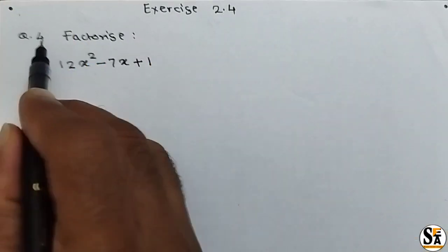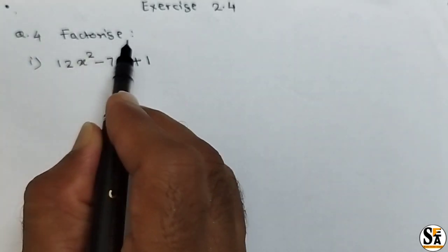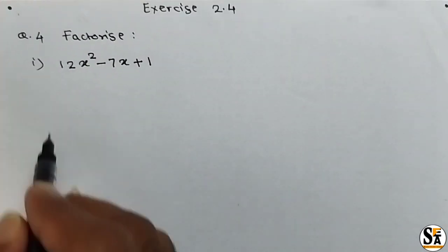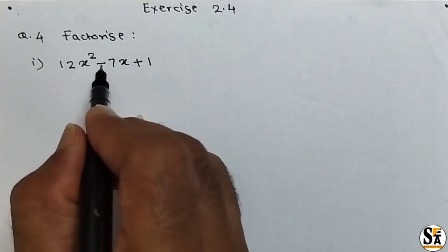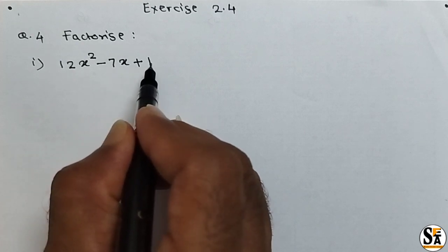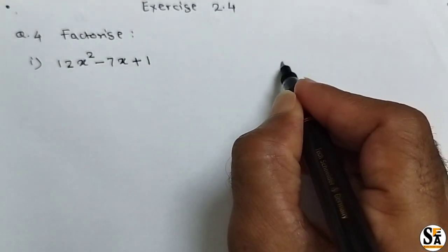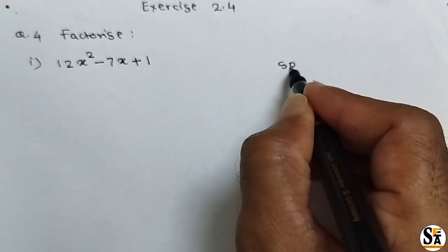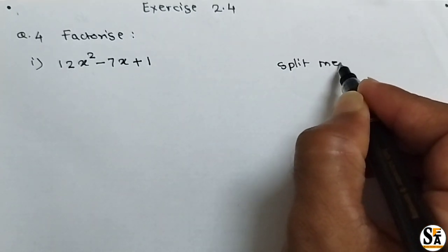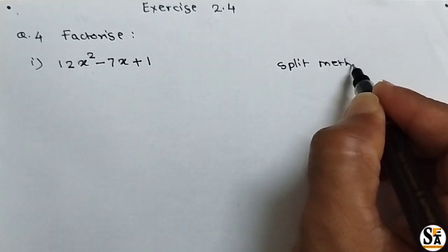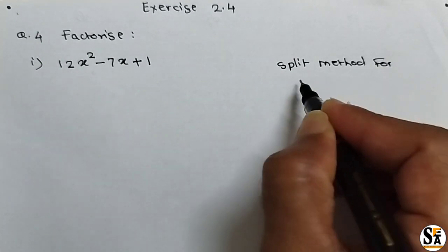See question number 4 of exercise 2.4. The question says factorize, and there are four sub-questions. The first one is 12x squared minus 7x plus 1. Here we will use the split method for the middle term.